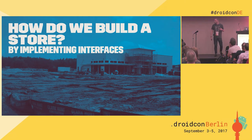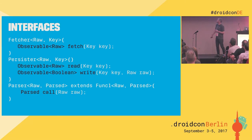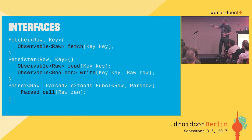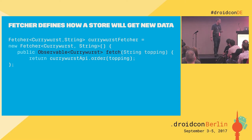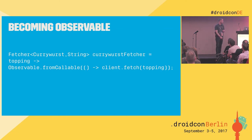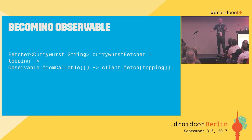How do we build a store? We have interfaces. We tell the store how to fetch, how to cache, and how to parse or transform our data. The Fetcher defines how a store will get new data — for example, a Retrofit endpoint calling the currywurst API. You declare your fetcher, override the fetch method, and that's it. If you're not using RxJava, you can easily become observable using observable-from-callable.